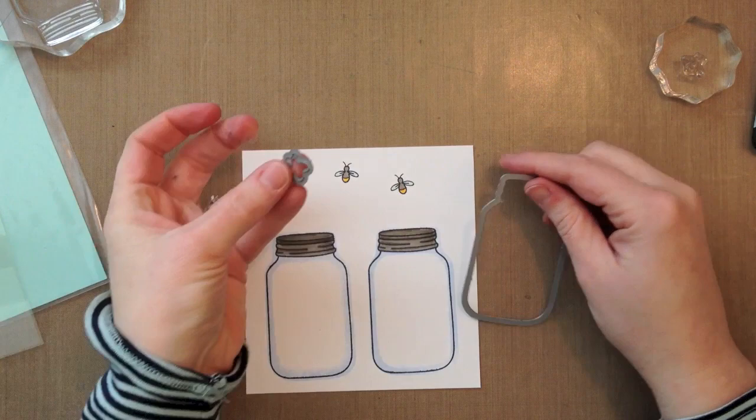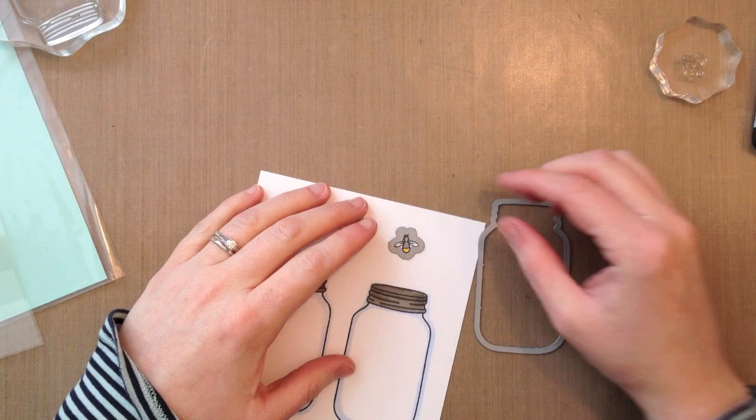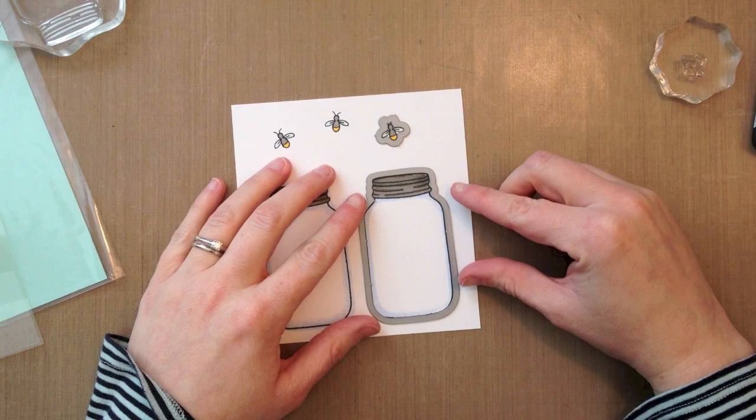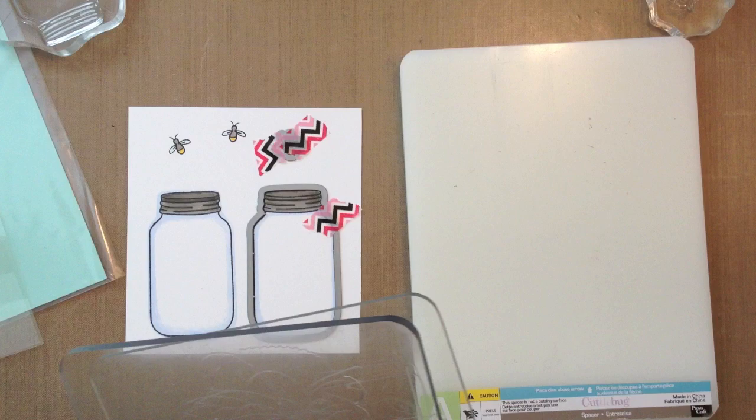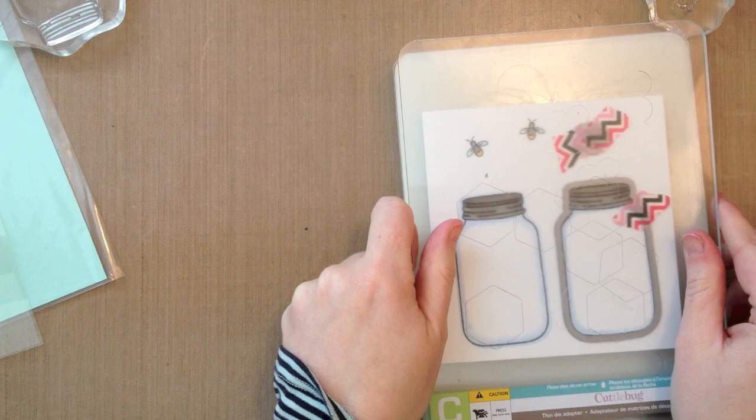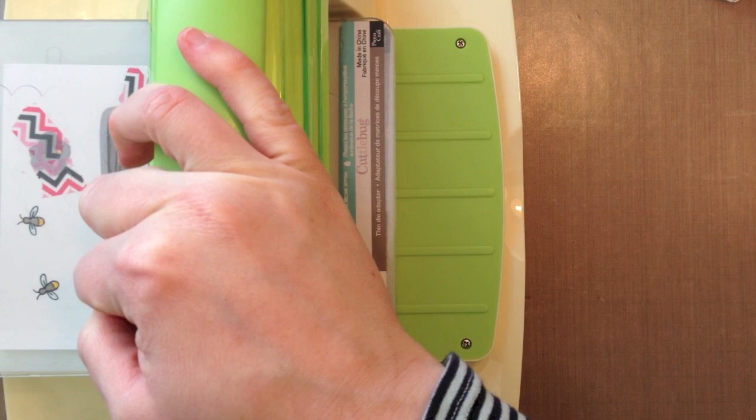So now we can take our dies and the dies line up with the outside edge, or the edge of the die lines up with the edge of the image. So when it's cut, there'll be a little bit of a border, a very small border. So it looks like you fussy cut it out and left that white edge on purpose. And I have a Cuttlebug. So the sandwich for a Cuttlebug is the A plate, the B cutting plate, and then you can put your paper, and then the C plate on top. So I'm just going to run it right through my Cuttlebug here.